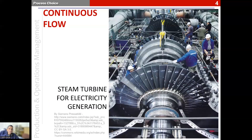Another example is the production of electricity. Electricity production happens continuously over a long period of time, uninterrupted, and electricity is used as it is generated.